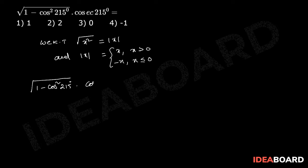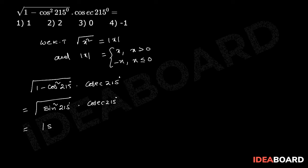Given √(1 - cos²215°) · csc(215°), using the identity 1 - cos²θ = sin²θ, this becomes √(sin²215°) · csc(215°) = |sin 215°| · csc(215°). Now, 215° belongs to the third quadrant, where sin is negative, so sin 215° < 0.